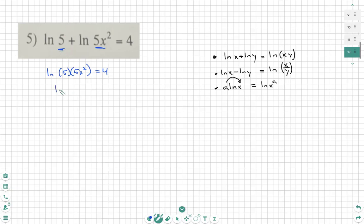So now we have the point where we're at ln of 5 times 5x squared, which is 25x squared equal to 4.